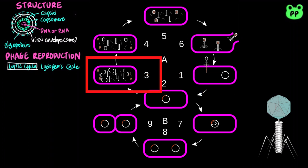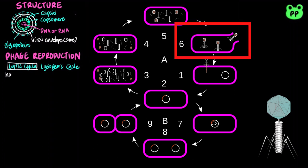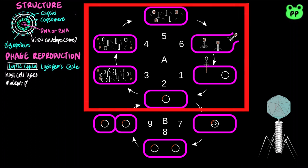The phage DNA directs production of phage proteins and copies of the phage genome by host and viral enzymes, using components within the cell. Next, the phage proteins self-assemble to form the phage structure. Lastly, new phages burst out, resulting in the death of the host cell. A phage that replicates only by a lytic cycle is known as a virulent phage.